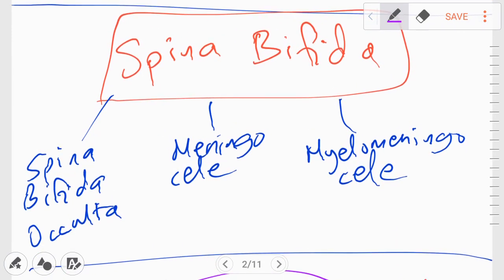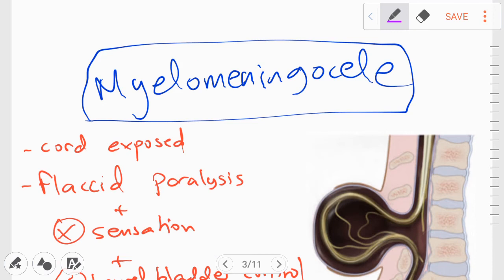Spina bifida is further divided into spina bifida occulta, meningocele, and myelomeningocele. So let's start by talking about the first disorder, myelomeningocele.